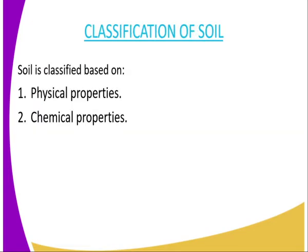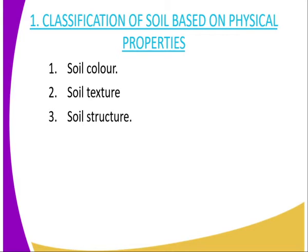We are going to start with the classification of soil. Soil can be classified based on physical and chemical properties. For soil classification based on physical properties, we have three aspects normally used: first, soil color; second, soil texture; and finally, soil structure.